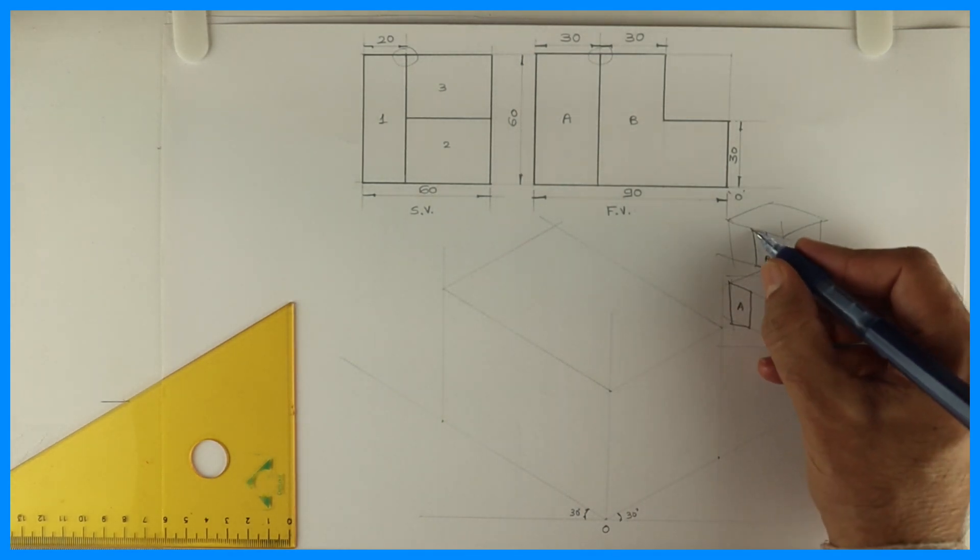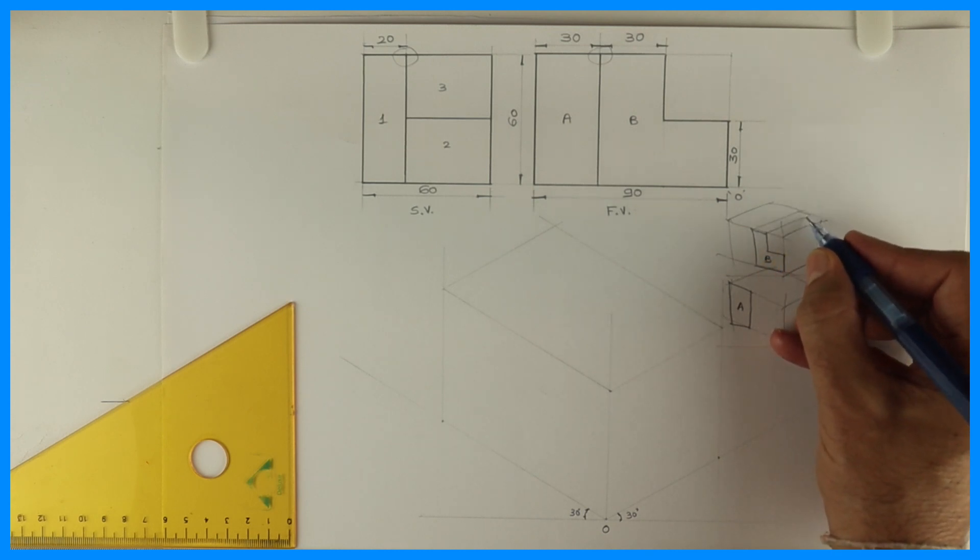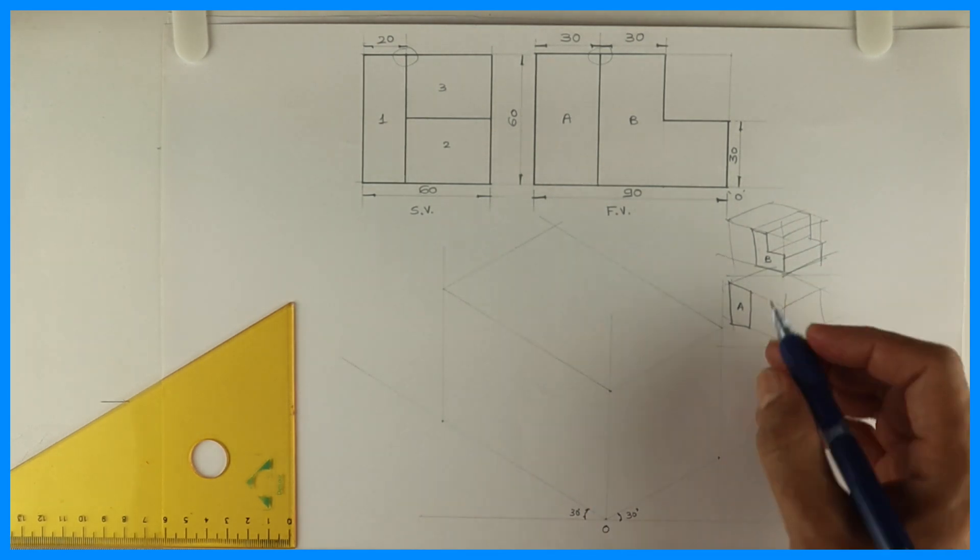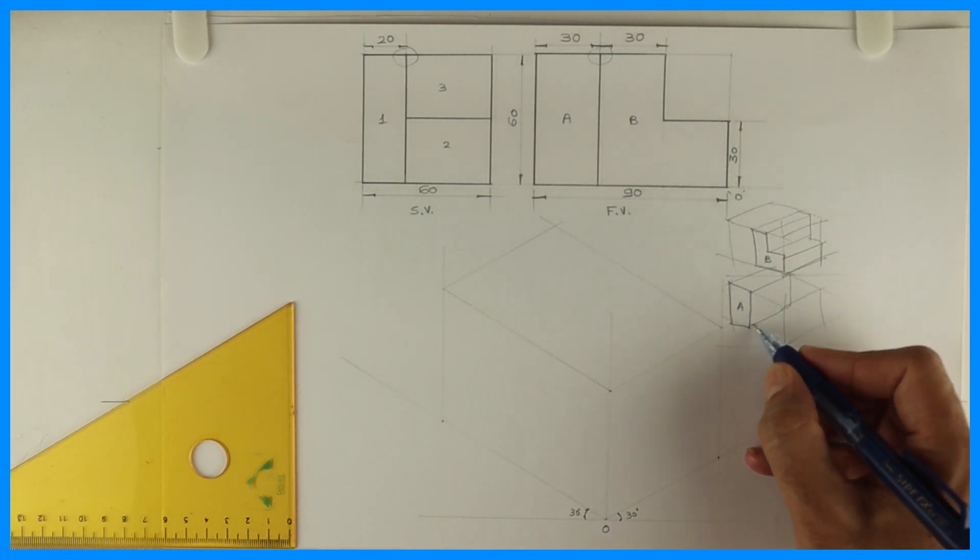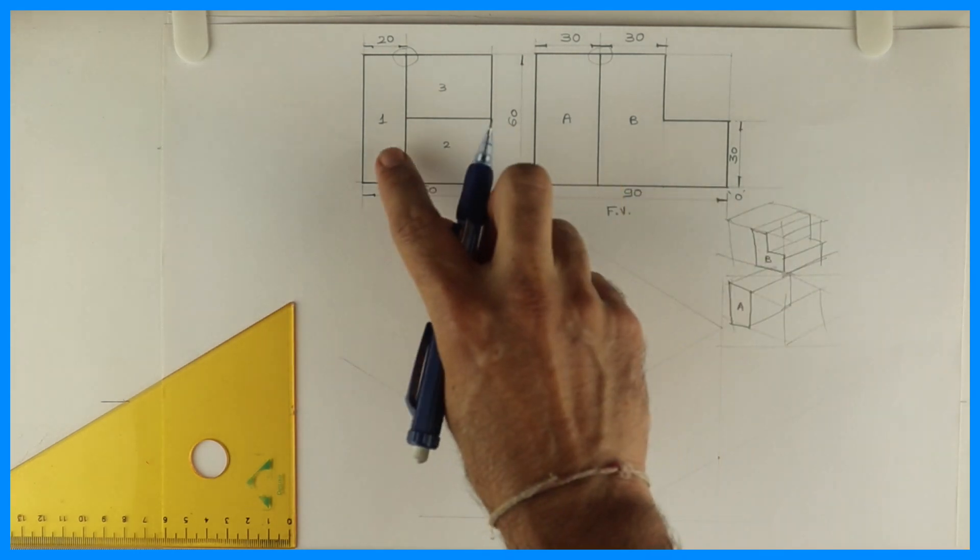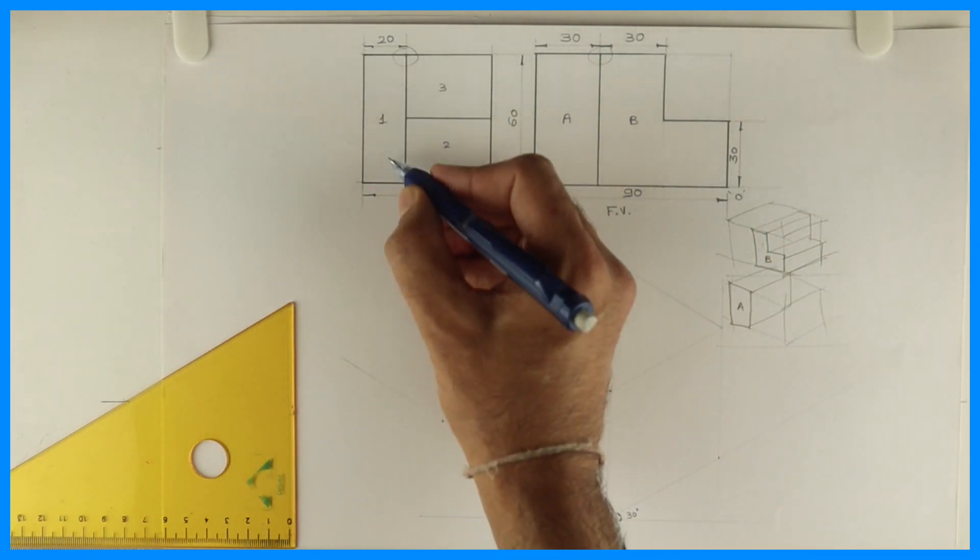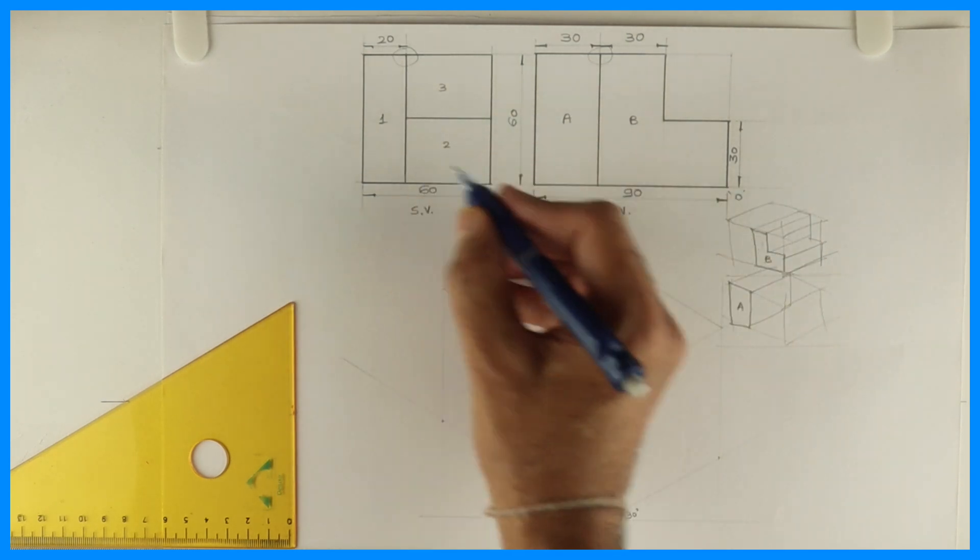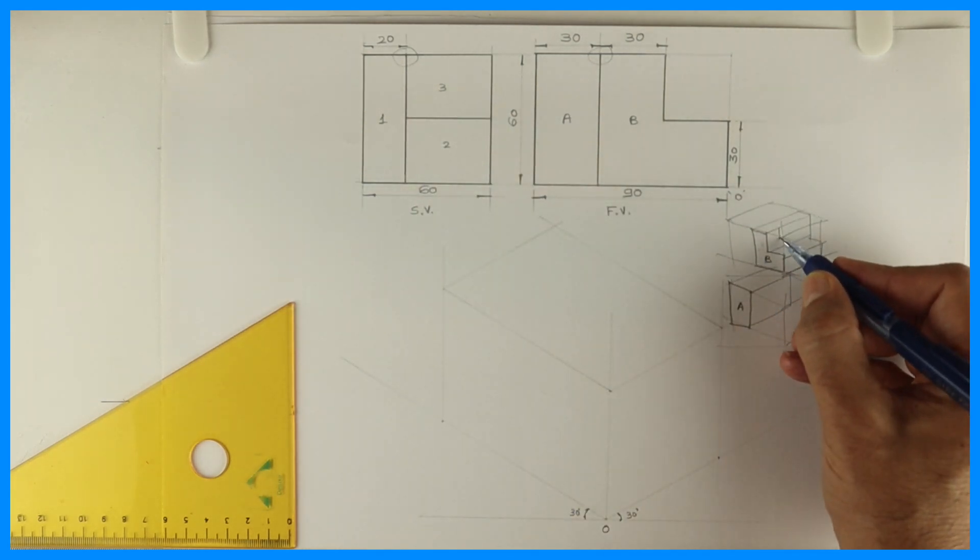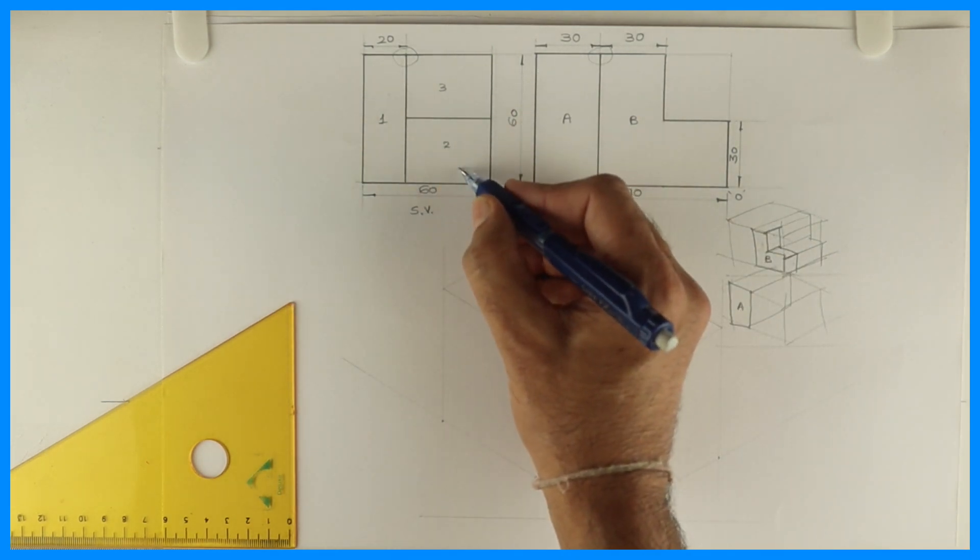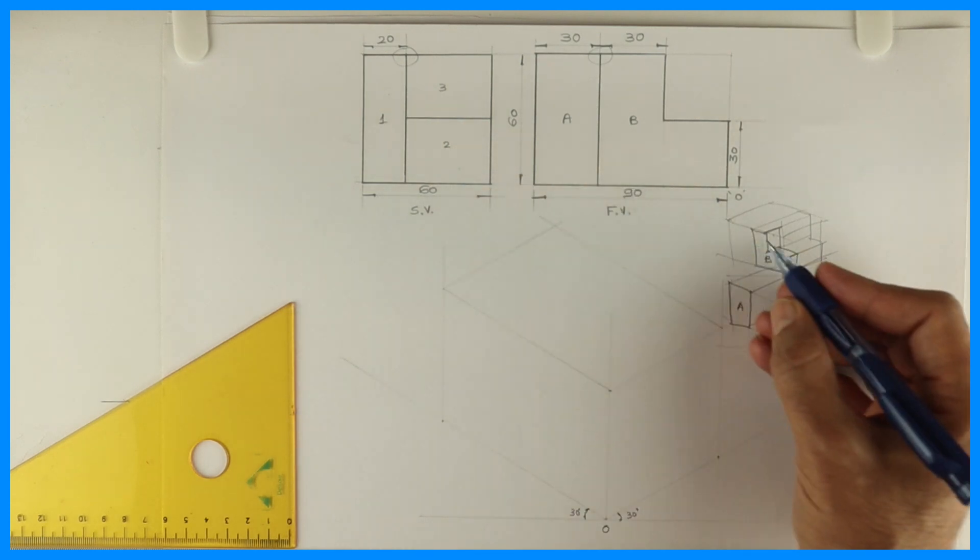So now whatever is there in the front, the same thing is behind. With that concept if I go, see this, it will be like this. And in A it will be like this. Now we have to see which one is correct from side view. Now if you see B, 1 is not matching with B. If you see B, it has two parts which is not matching with 1, but it is matching with 2 and 3.